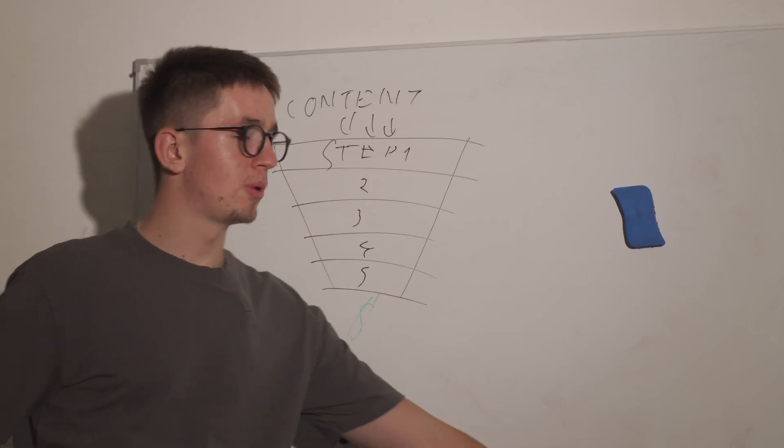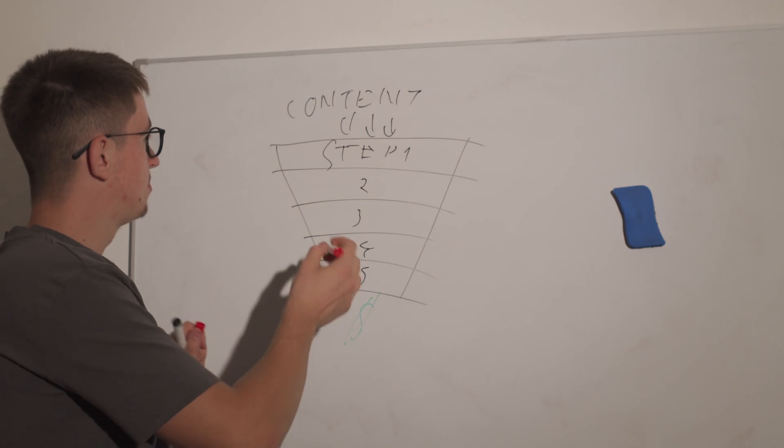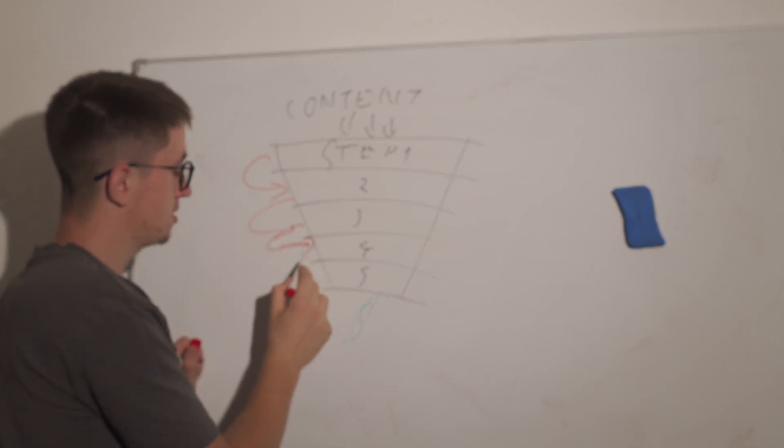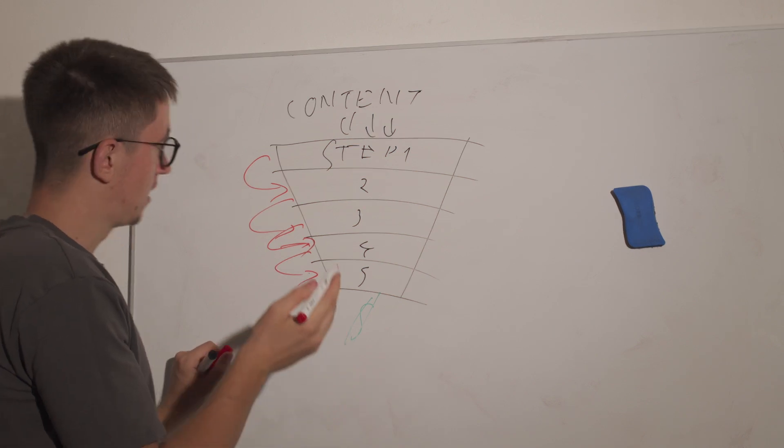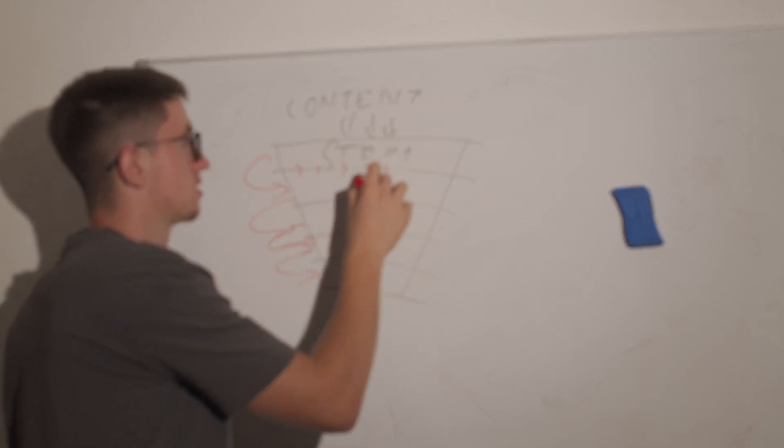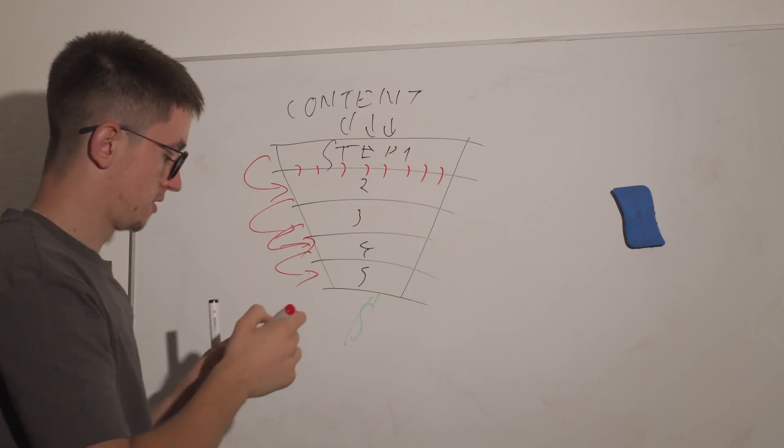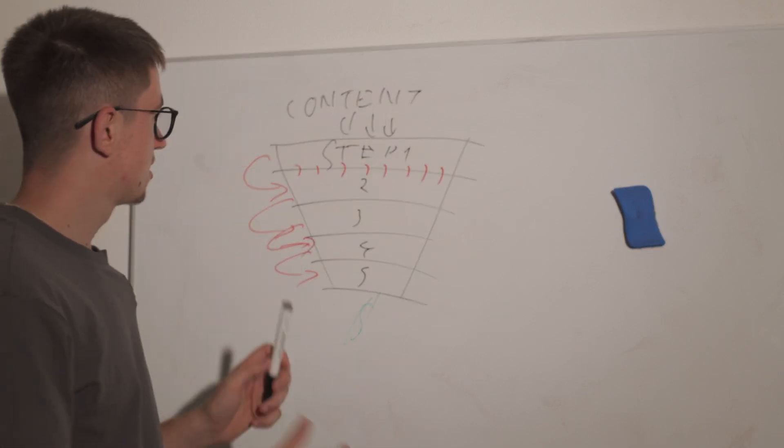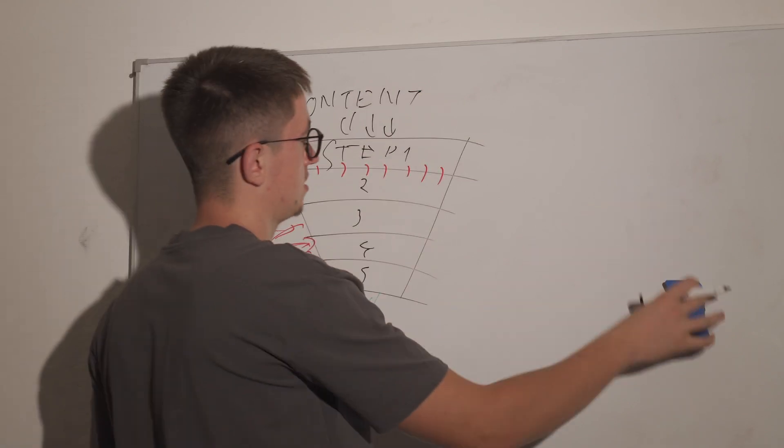Of course there are funnels and there are more things which matter. One of the things I do see people run into that problem is this: when people are going through step to step to step, they are missing one thing and that is how these two steps are connected to each other. And this is what I call the joint point.